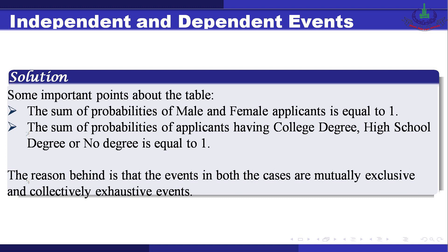Some important points: the sum of probabilities of male and female applicants equals one, and the sum of probabilities of applicants having college degree, high school degree, or no degree also equals one. The reason is that in both cases the events are mutually exclusive and collectively exhaustive.